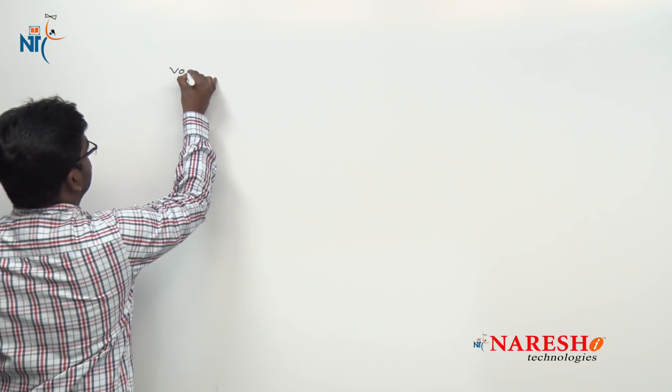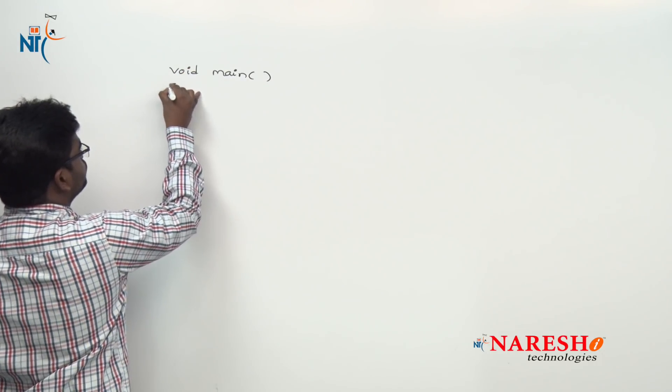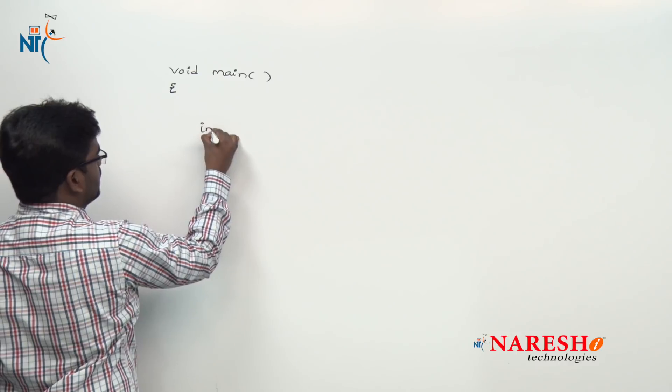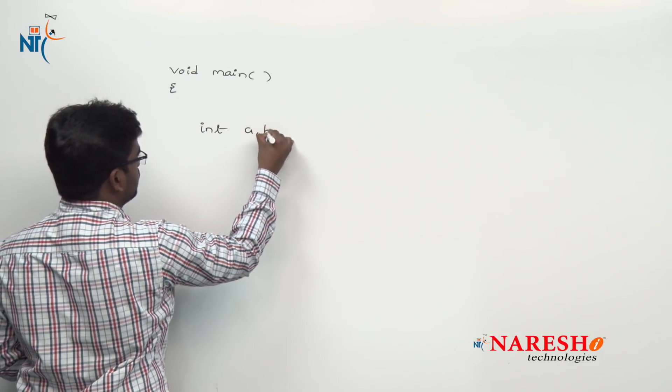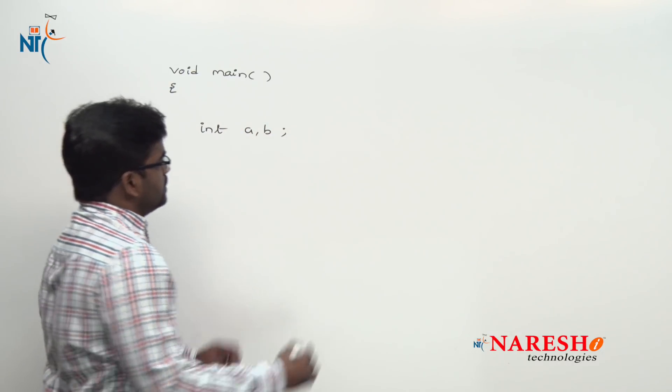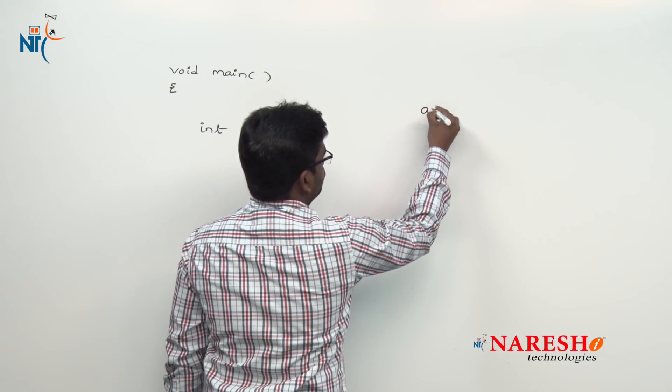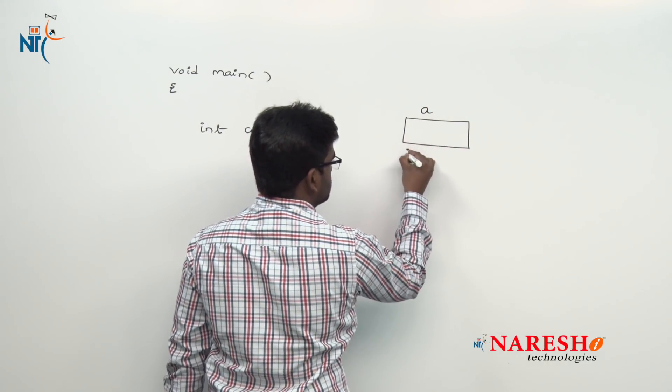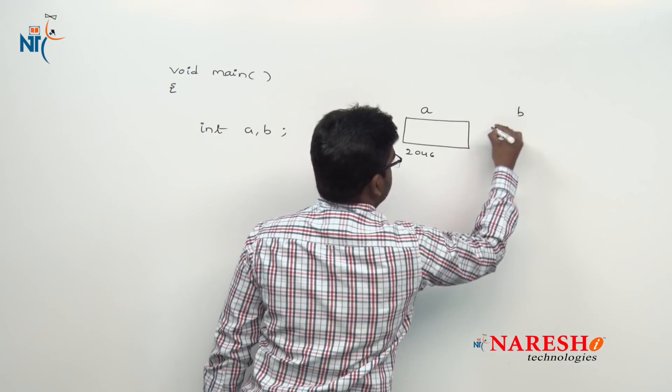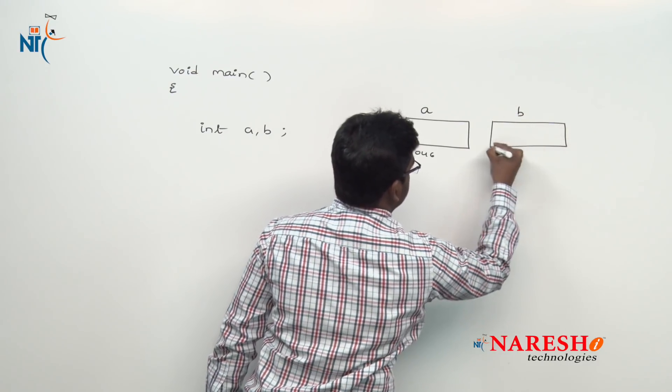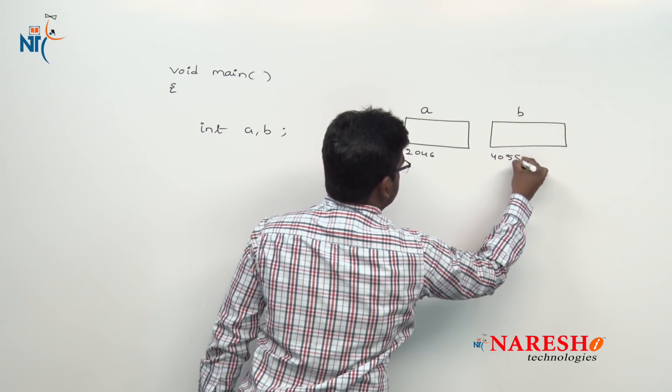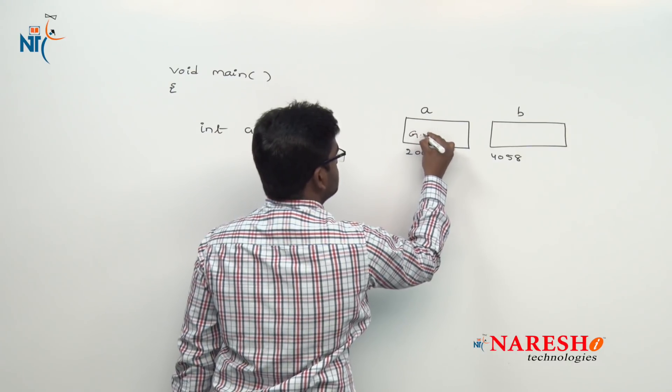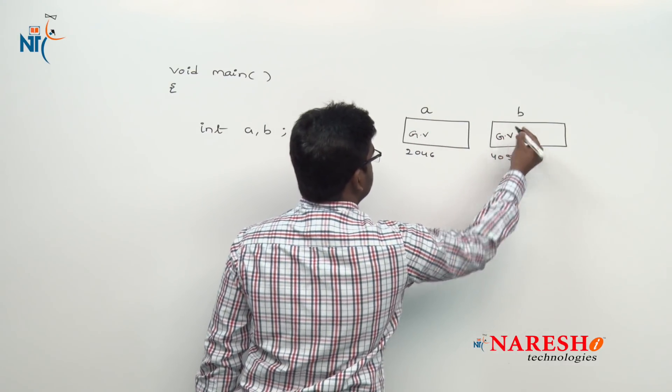First in the program we are declaring two variables: int a, b. These are the local variables. These variables get memory allocation at two different locations, first one at some location and second one at another location. And of course, local variables initialize with the garbage values automatically.